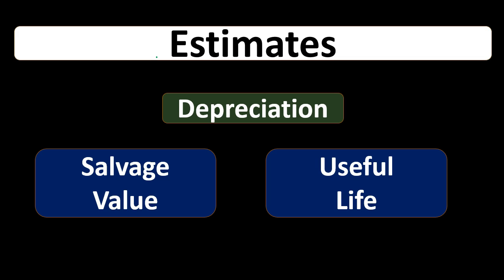There are a couple of areas where the estimate could clearly change. When we have depreciation, the cost is the cost — we bought it for what we bought it for, so that's not generally an estimate. What is an estimate is, one, the salvage value — how much do we think it's going to be worth at the end of its useful life, how much can we scrap it for? And two, the useful life itself — how long do we think this thing is going to last and how long are we going to be using it in operations? Those are the two things that could change.